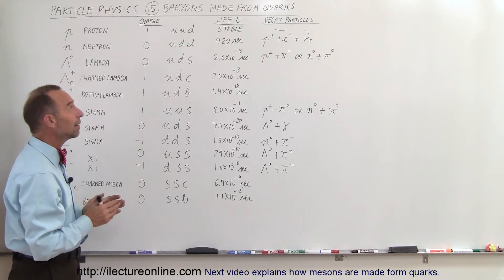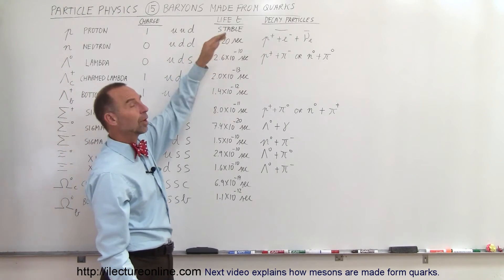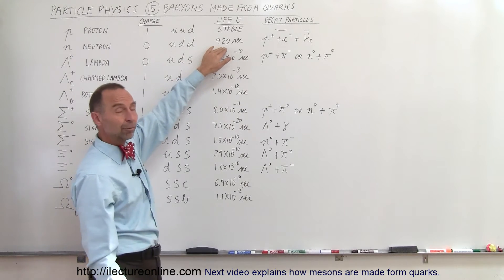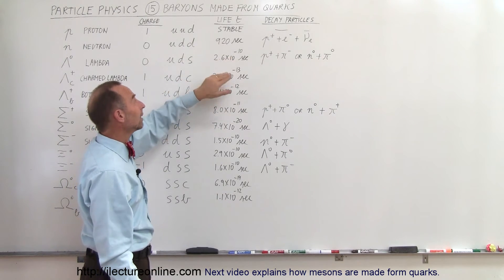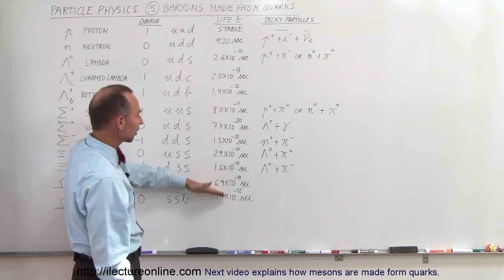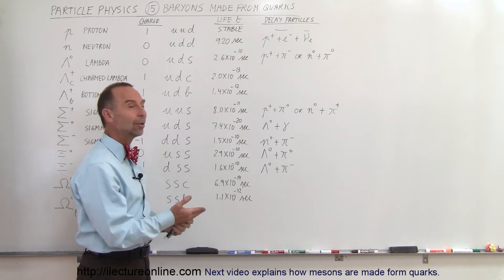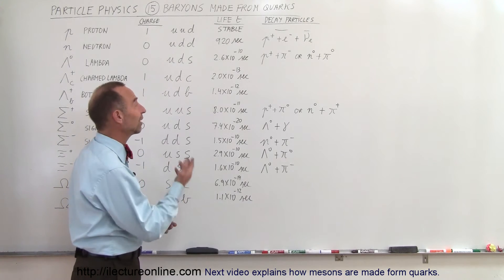Notice the decay time. A stable particle, like a proton, will last pretty well forever. Neutrons only last for about 15 minutes in the free format. And then look at the time that these other particles exist: less than one billionth of a second for every one of them.